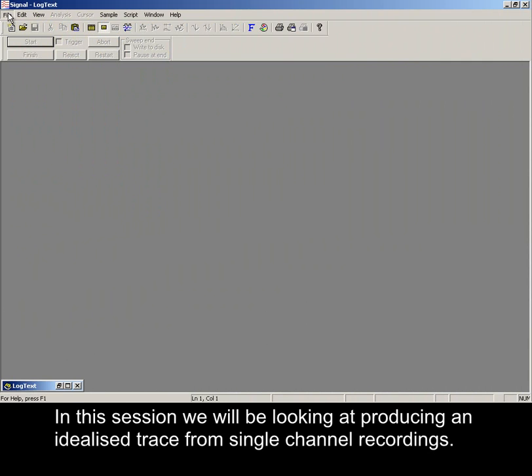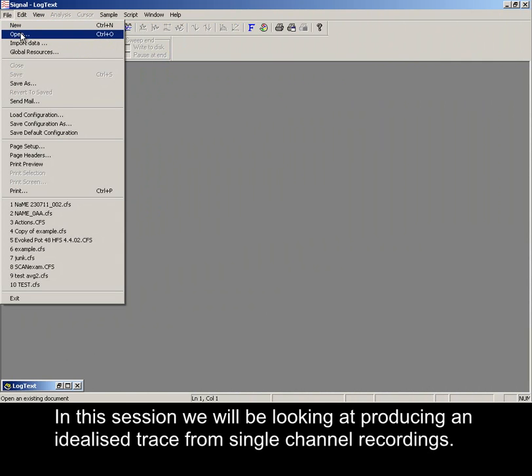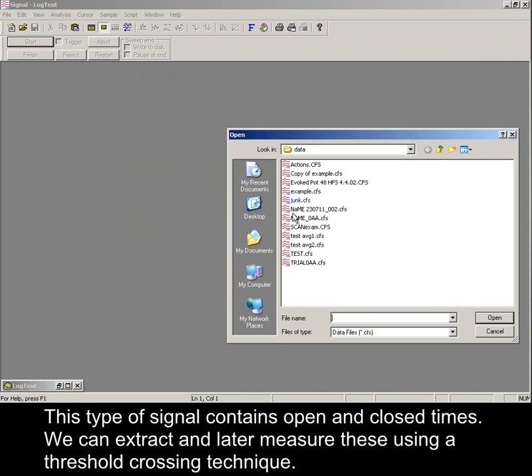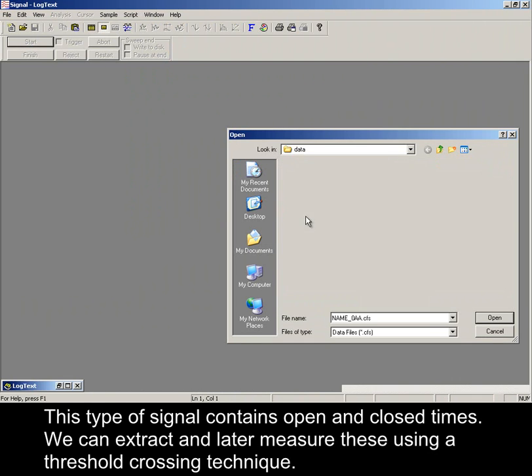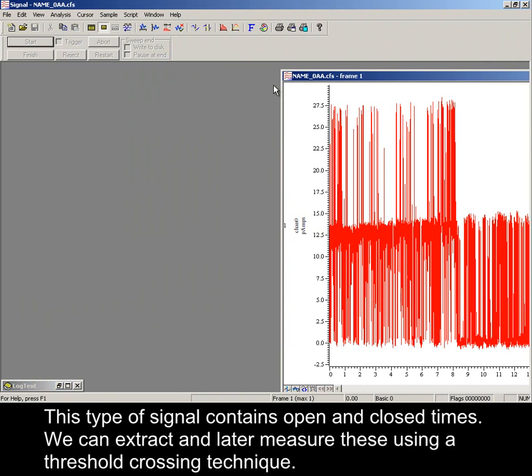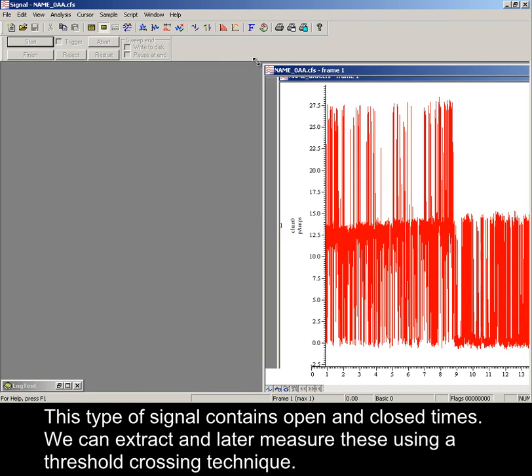In this session, we will be looking at producing an idealized trace from single channel recordings. This type of signal contains open and closed times. We can extract and later measure these using a threshold crossing technique.